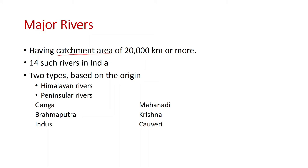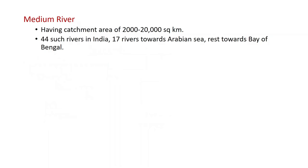Major rivers are based on their origin — one group is the Himalayan rivers originating from the Himalayas. The major rivers in India include the Ganga, Brahmaputra, the Indus (Himalayan rivers), and the peninsular rivers like the Mahanadi, Krishna and Cauvery. Medium rivers have a catchment area of 2,000 to 20,000 km² — there are 44 such rivers in India, of which 17 drain towards the Arabian Sea and the rest towards the Bay of Bengal.